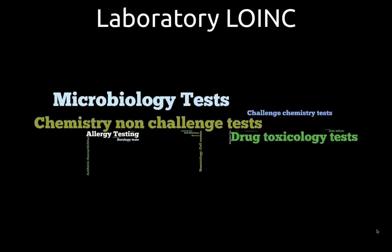LOINC divides its work into two divisions: the laboratory side and the clinical side. It's all one database, but there are committees focusing on each space. Laboratory LOINC includes essentially all things you can measure about a specimen, whereas clinical LOINC includes all things you can measure or observe about a whole person. The laboratory side covers content from all areas of clinical laboratory testing — microbiology, chemistry, toxicology, and so forth.